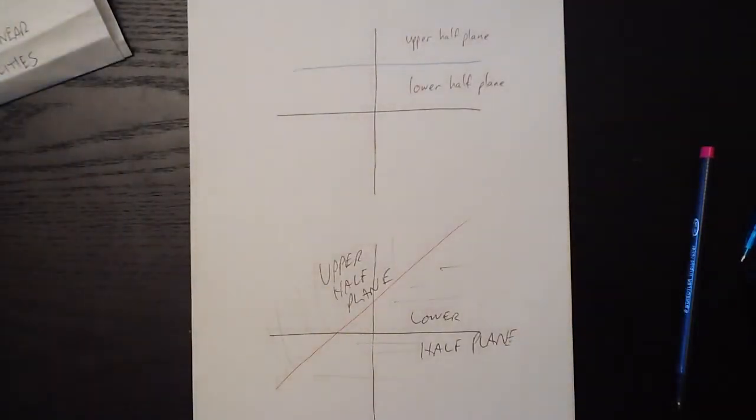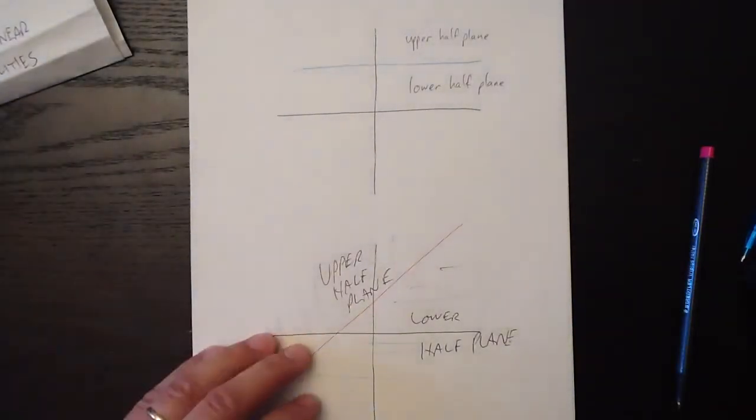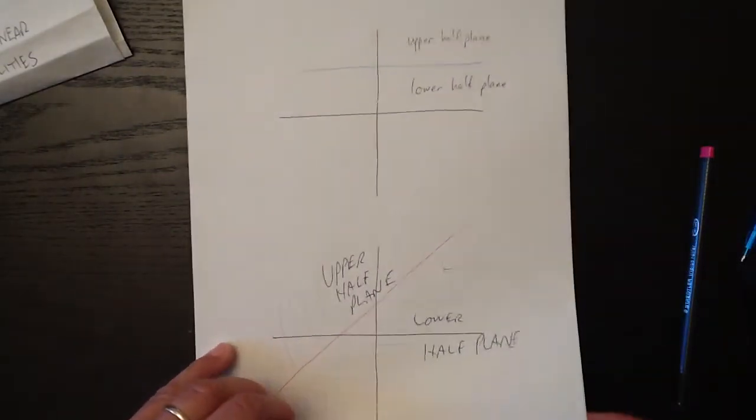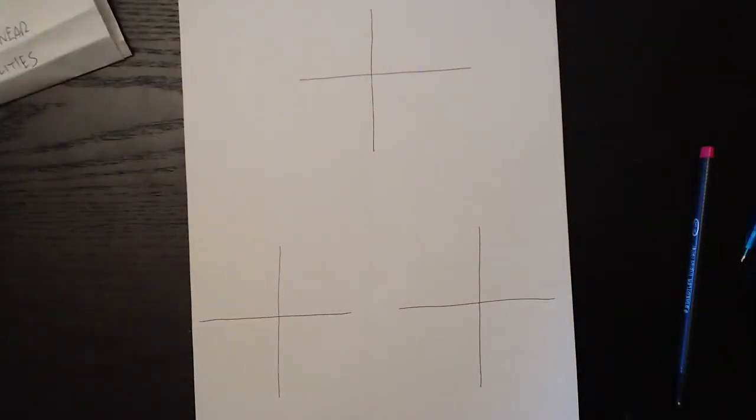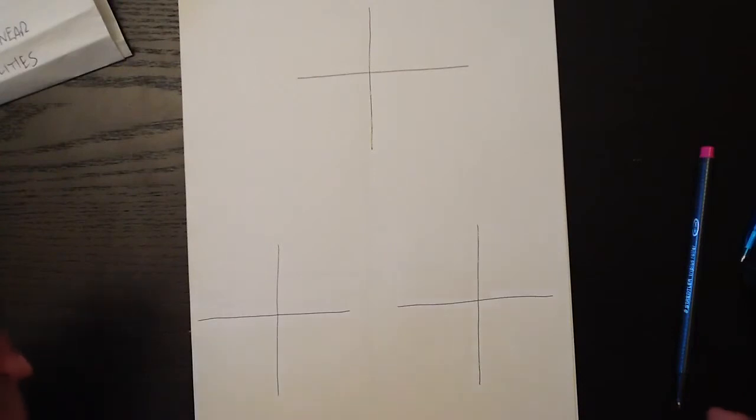So having an upper and a lower half plane makes sense whenever there's a vertical. Let's summarize it here on this page.